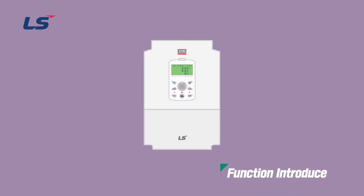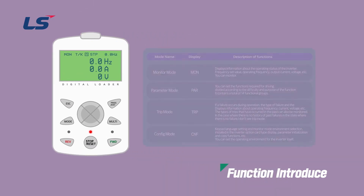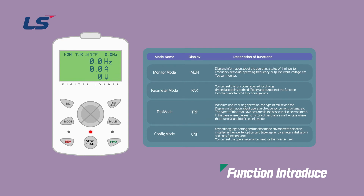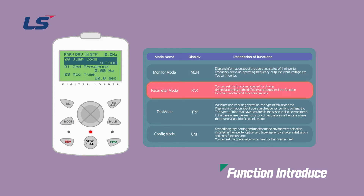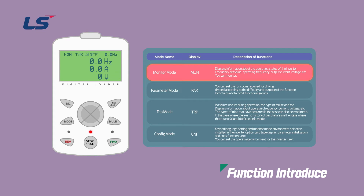First, let's talk about the digital loader. The digital loader is connected to an S100 inverter and has four modes. If you click the mode key in monitor mode, the parameter mode appears. If you click the mode key again, the configuration mode appears, and if you click the mode key again, you can see that it returns to the monitor mode. However, the trip mode can be moved if there is a previous trip history.